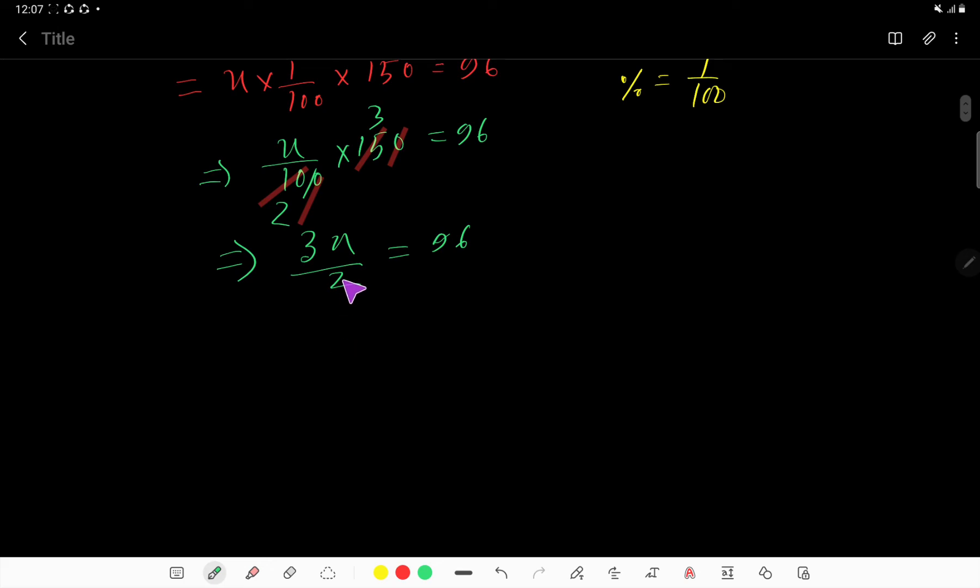So to cancel these two, we will multiply by 2 from both sides. That is 3x over 2 times 2 equals 96 times 2. Now these two cancel each other. So we are getting 3x equal to 96 times 2.